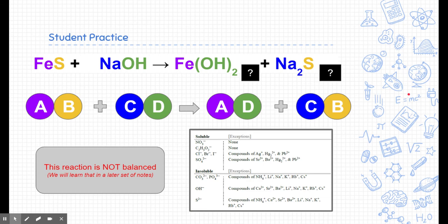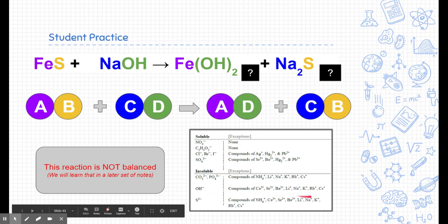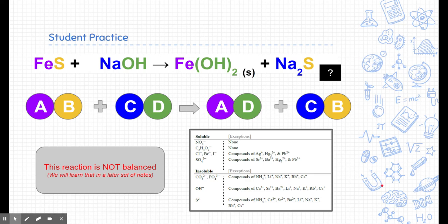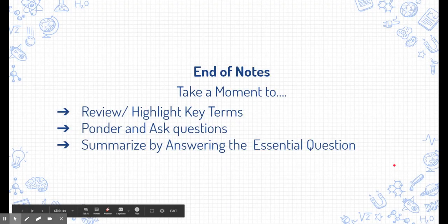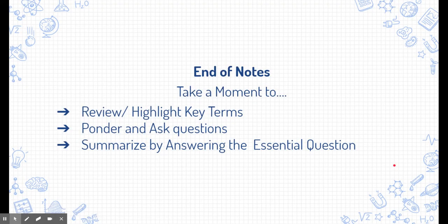Based on solubility rules: hydroxide is insoluble, and iron is not an exception, so Pb(OH)₂ is an insoluble product — it forms a solid precipitate. For sodium sulfide: sulfide is listed as insoluble, but sodium is one of the exceptions listed right here, so Na₂S is aqueous. That's the end of the notes — take a moment to review these things, and good luck.